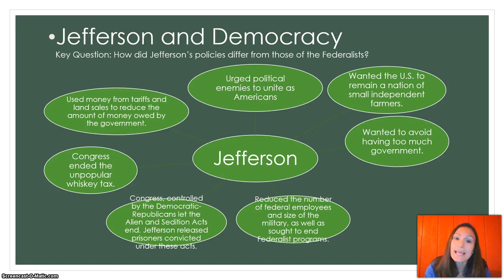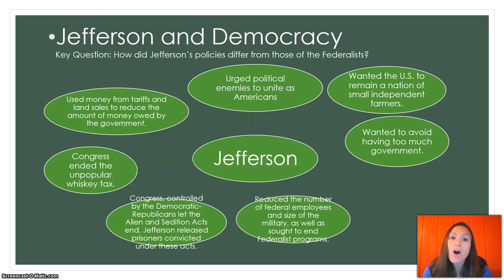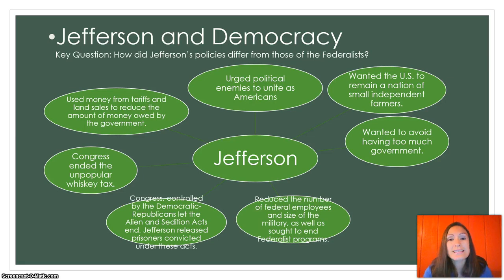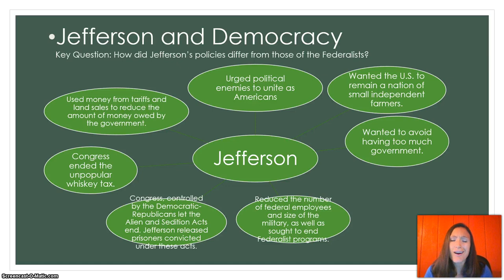Jefferson used money from tariffs and land sales to reduce the amount of money owed by the government — he reduced the national debt. The opposite party, Hamilton, thought there should be a national debt because if wealthy men are owed money by the government, they want to make sure they get their money back and will ensure the government succeeds. But Jefferson thought no — he didn't want high debt, and he reduced it.